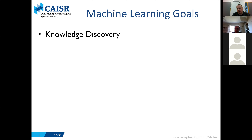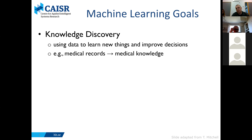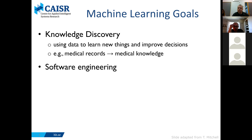There are basically three main reasons for using machine learning. One is knowledge discovery, which is when we are trying to learn new things and improve decisions — for example, going from medical records to medical knowledge. We have a list of patients, what has been done to them, how it worked, and we want to extract new insight into what's possible and what works.